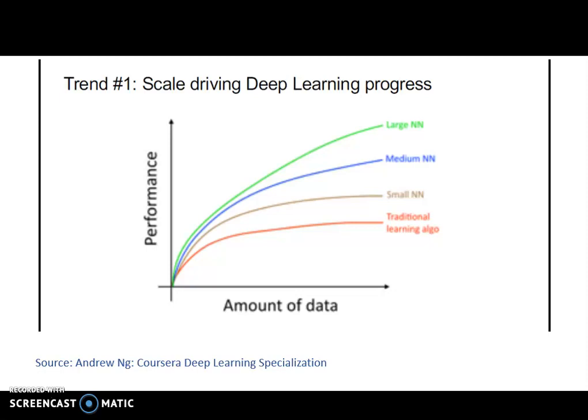Now today, the state of the technology is known as deep learning. Deep learning is nothing but the deep neural network which we will cover in this course. Deep learning is the technology people are using today to solve every kind of problem — from driverless cars to Alexa or Siri. Everywhere the underlying technology is deep learning.